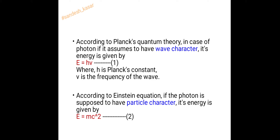According to Planck's quantum theory, in the case of a photon, if it is assumed to have wave character, its energy is given by E = hν, where h is Planck's constant and ν is the frequency of the wave. This is equation 1.